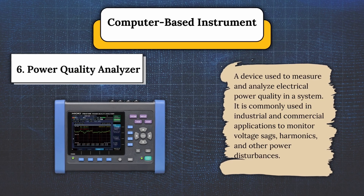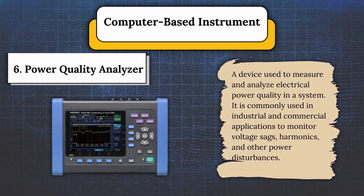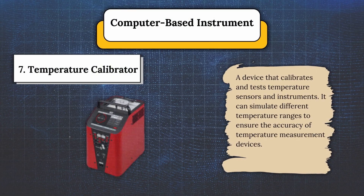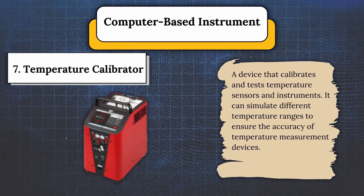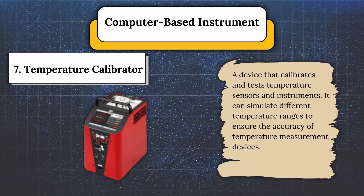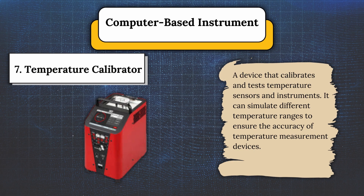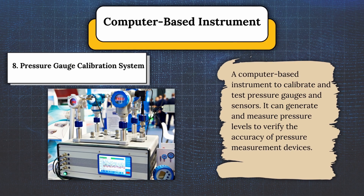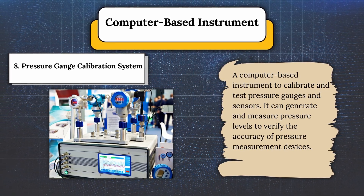Number six, power quality analyzer — measures and analyzes electrical power quality in a system, commonly used in industrial and commercial applications to monitor voltage sags, harmonics, and other power disturbances. Number seven, temperature calibrator — calibrates and tests temperature sensors and instruments, simulating different temperature ranges to ensure accuracy. Number eight, pressure gauge calibration system — a computer-based instrument to calibrate and test pressure gauges and sensors, generating and measuring pressure levels to verify the accuracy of pressure measurement devices.